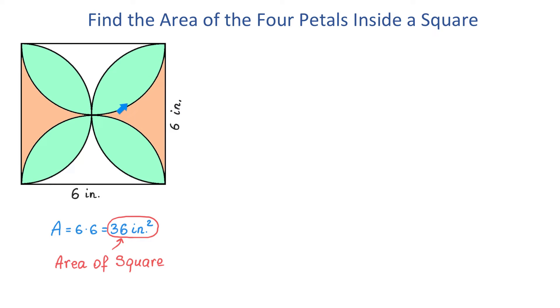If we take this top semicircle and this bottom semicircle, together they form one circle. The radius of this circle is 3 inches because this is half of the side of the square.